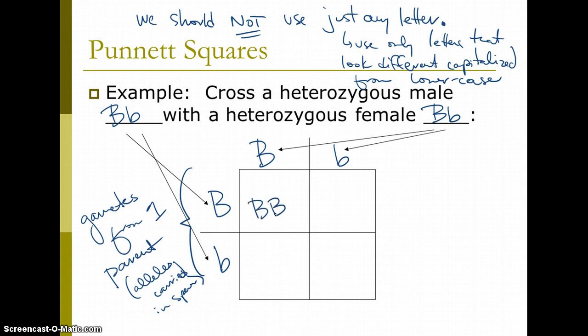So, in this box, we'd have big B, big B. Here, we'd have big B, little B. Big B, little B. Little B, little B.